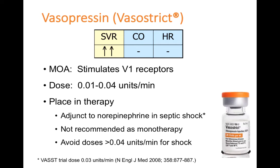Vasopressin is recommended as an adjunctive agent to norepinephrine in septic shock, based on the VASST trial where the dose studied was 0.03 units per minute. It's not recommended as monotherapy, as the trial showed no benefit for monotherapy versus as an adjunct. In practice, it's not recommended to exceed 0.04 units per minute, as vasopressin can be a very strong constrictor, and adverse effects such as worsening ischemia or myocardial infarction have been reported.